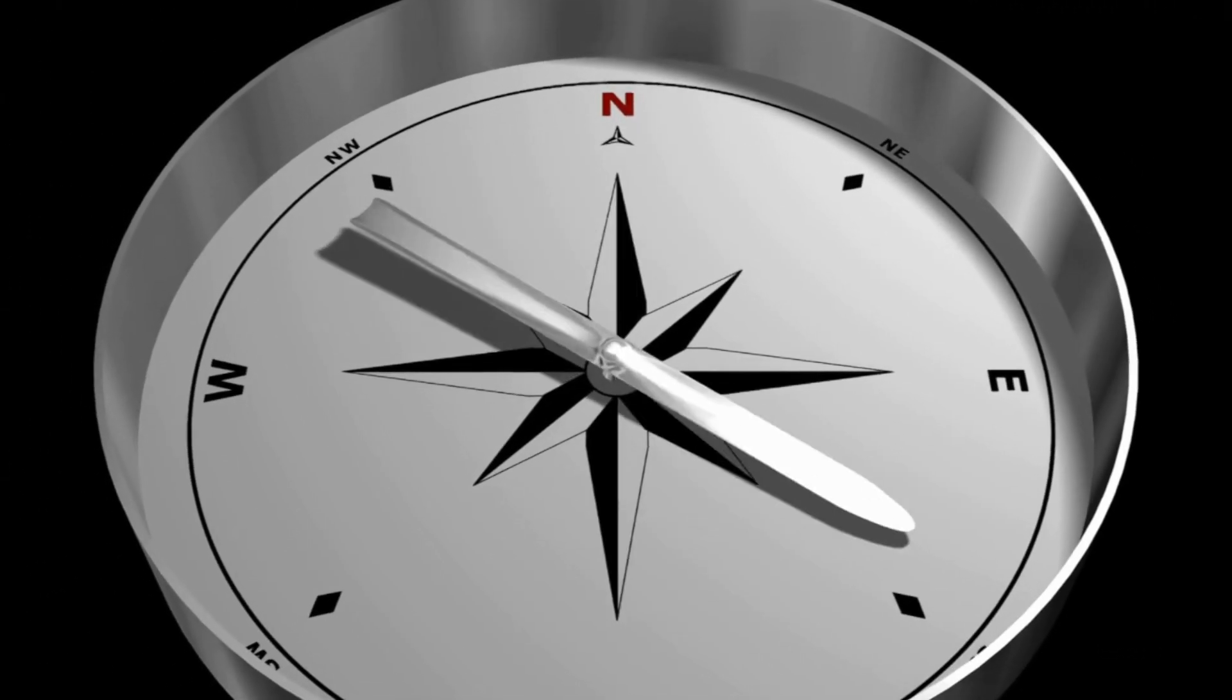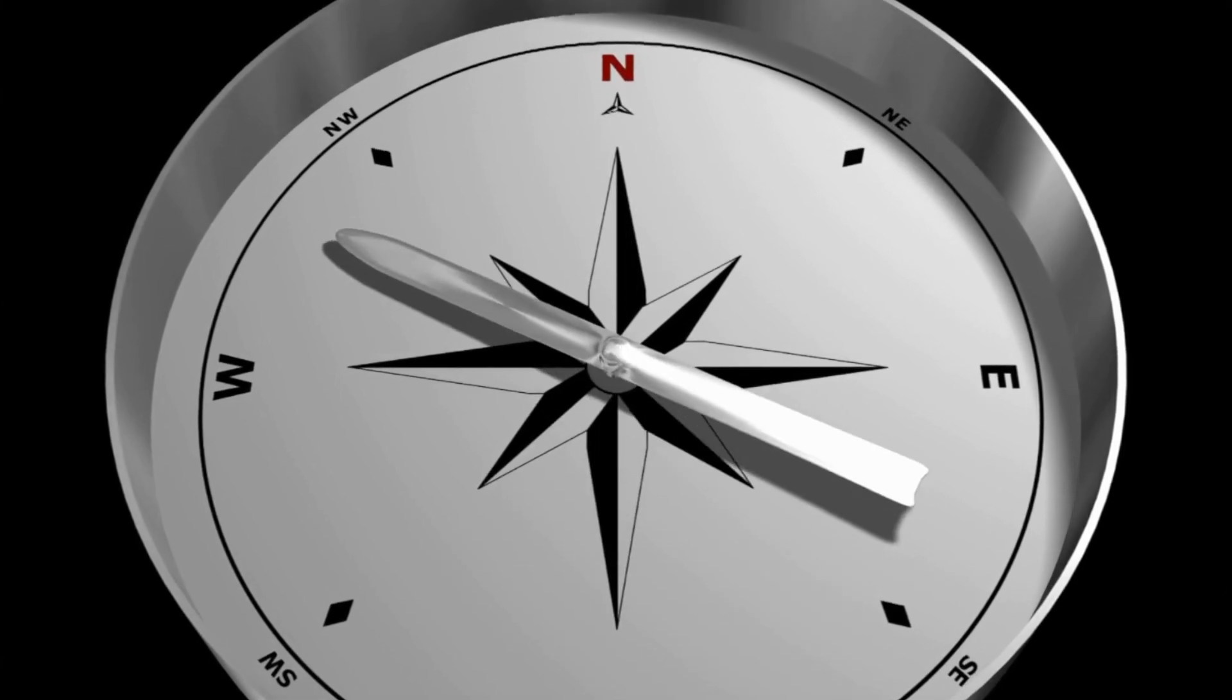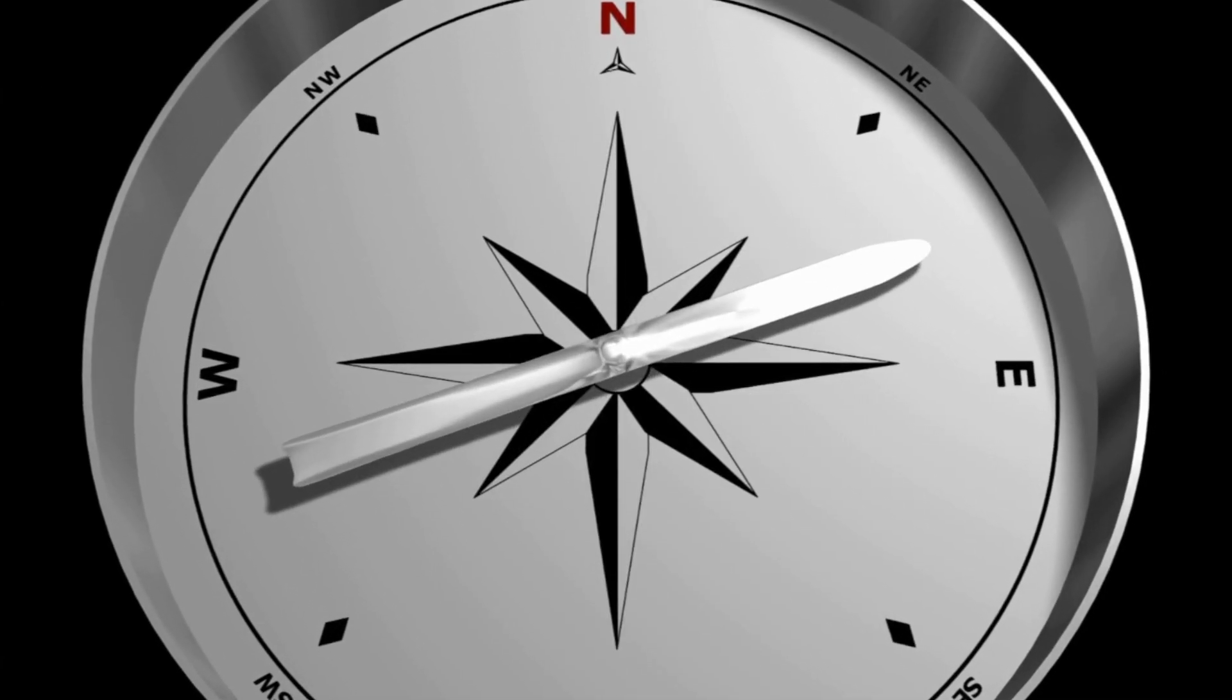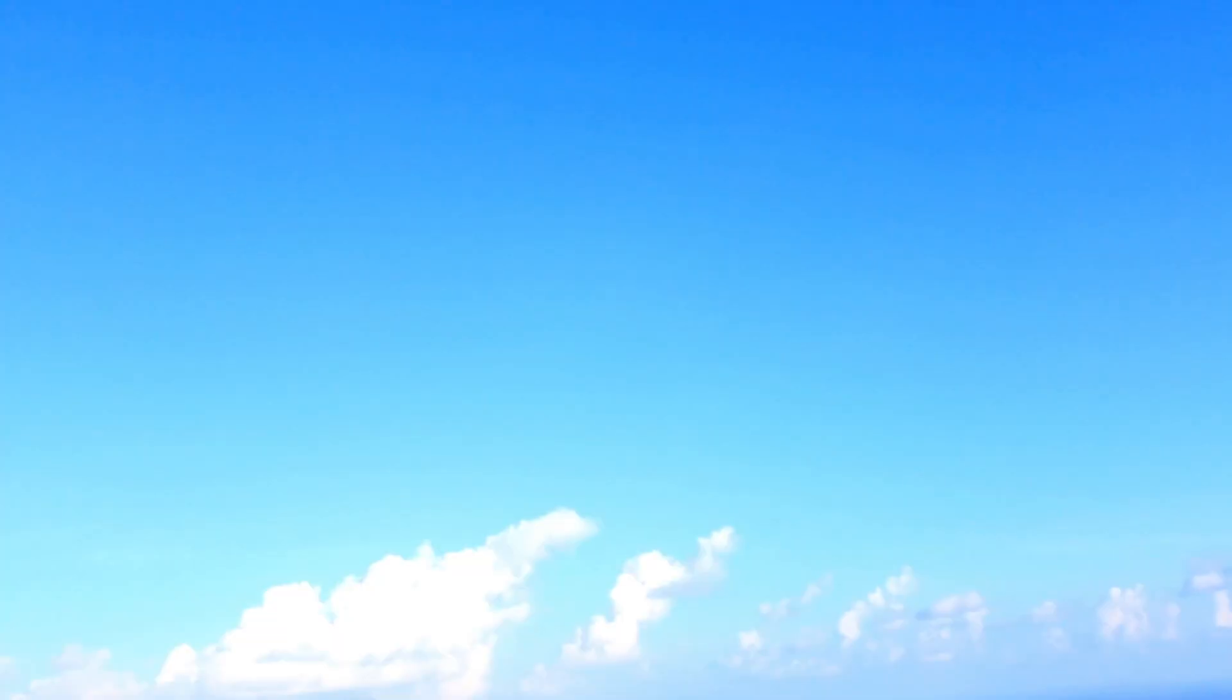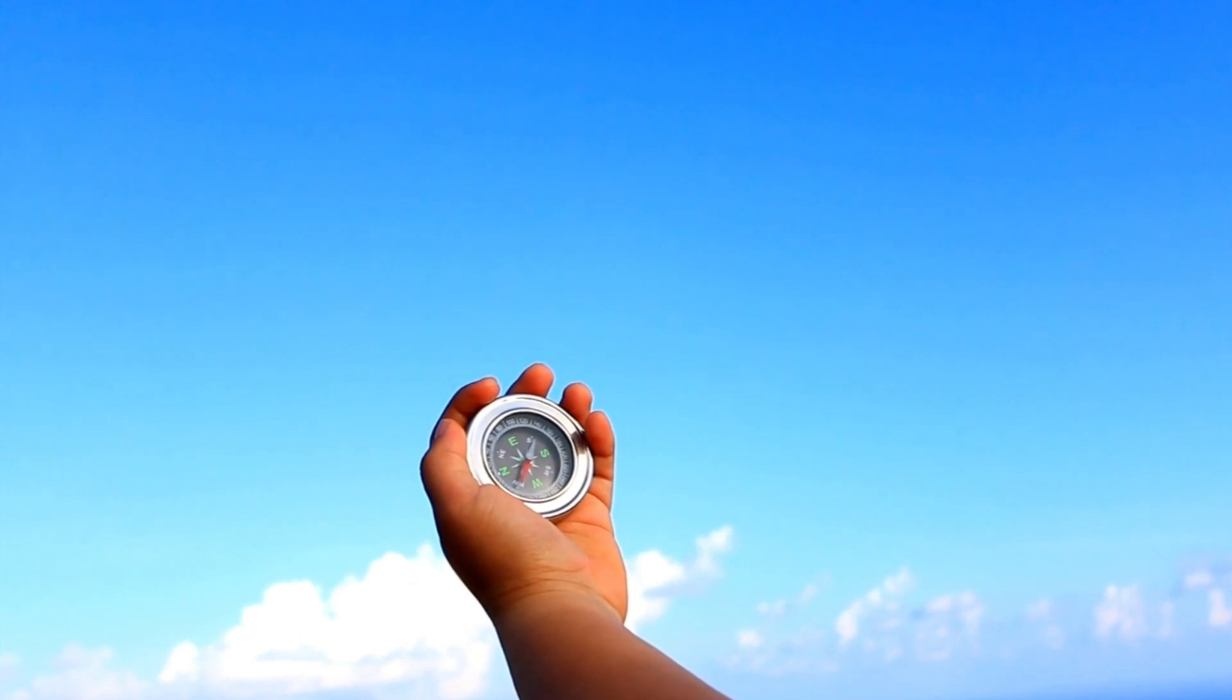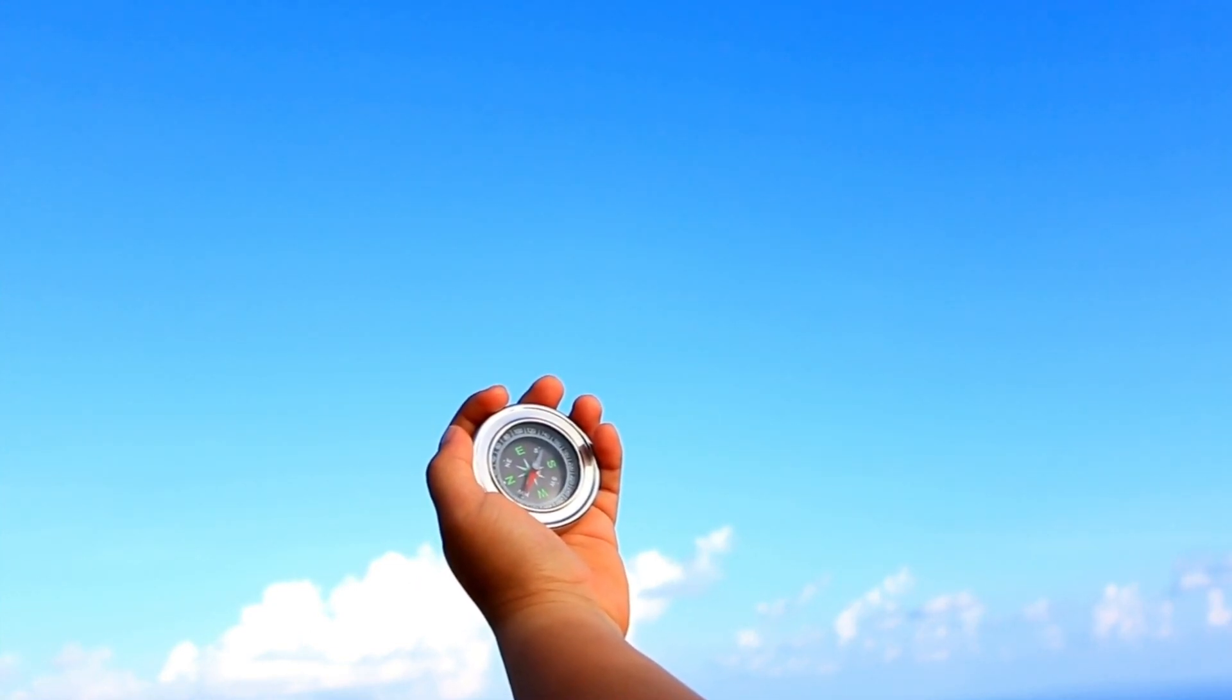One end was often marked N for north or colored in some way to show that it pointed north. Because of the Earth's magnetic field, the magnetic needle was always drawn to the magnetic north pole.